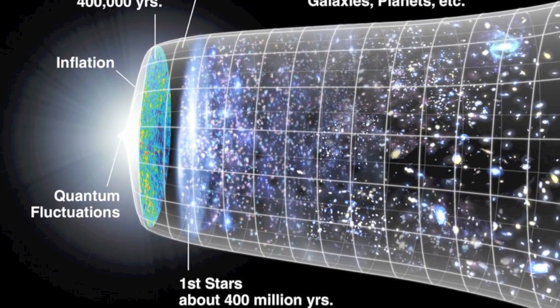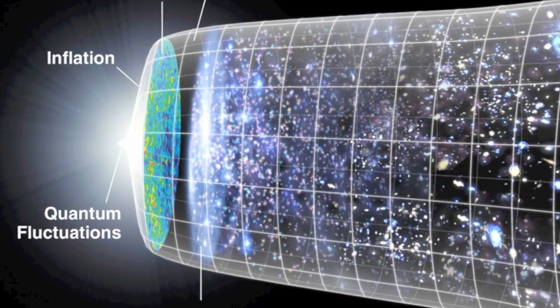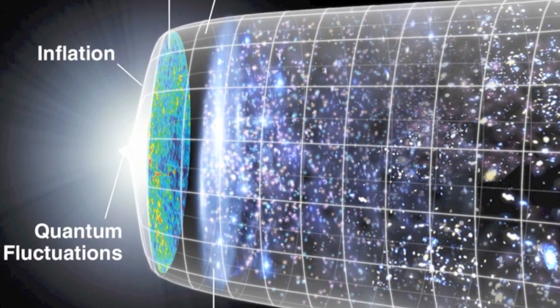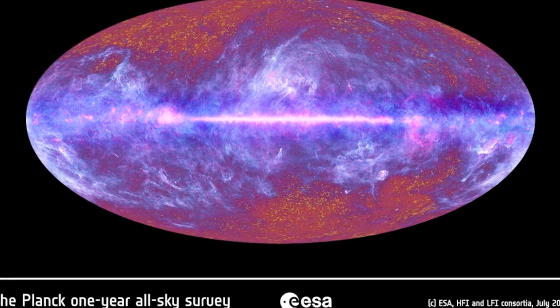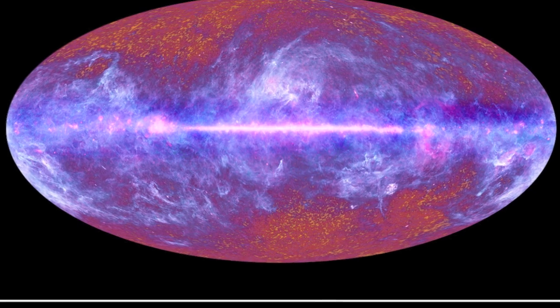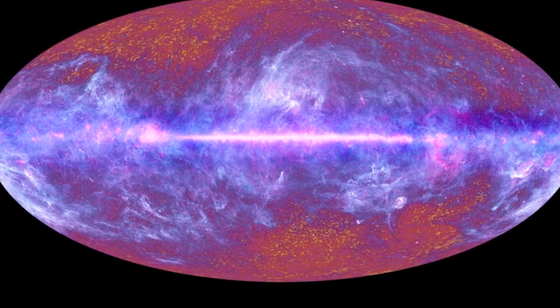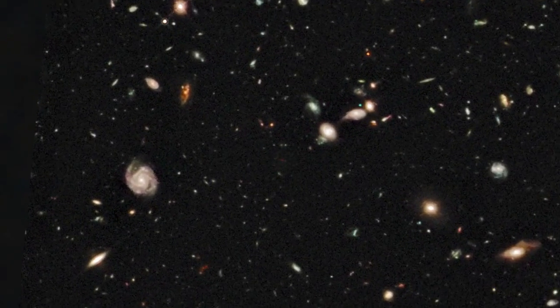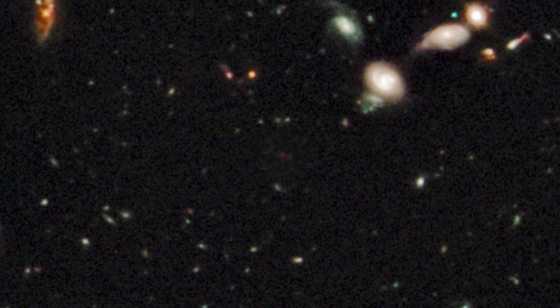There is a gap in our observations and understanding of a critical time in the universe. We have measurements of the cosmos from when it was only 400,000 years old, and observations of the earliest galaxies from when the universe was 480 million years old. And we have nothing in between.